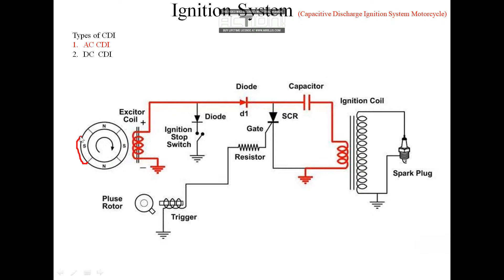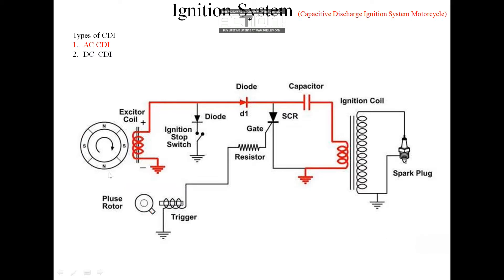This peak of certain width indicates the position of the piston from the top dead center. It acts as a trigger, which in this diagram is taken out here. This triggering coil is supposed to be located on the magneto itself, but for simplicity we have taken it out separately. In an actual motorcycle, this peak and pickup coil are both located on the magneto.